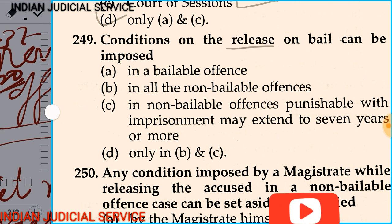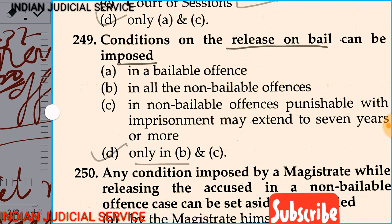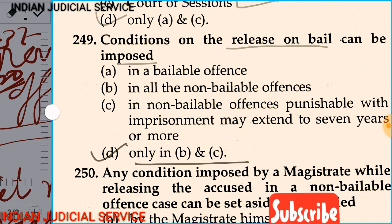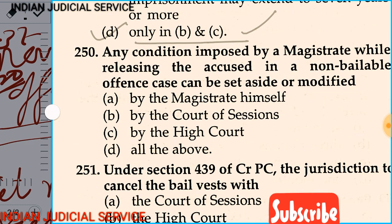Question number 249: The condition on the release on bail can be imposed in — option A: bailable offence, option B: all non-bailable offences, option C: non-bailable offences punishable with imprisonment extending to 7 years or more, option D: only B and C. The answer is option D — only B and C — because in bailable offences the accused has a right to bail, so no conditions are imposed.